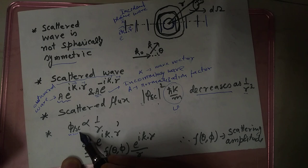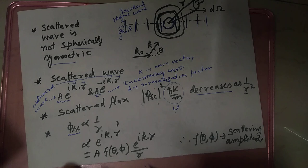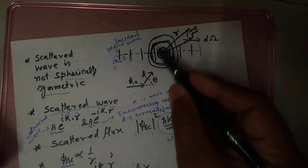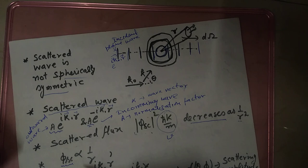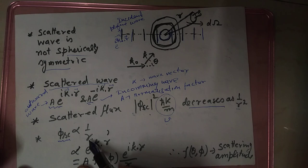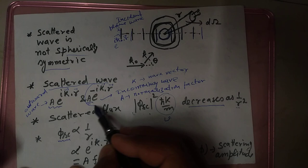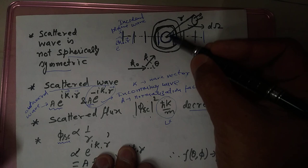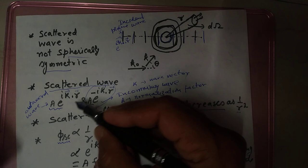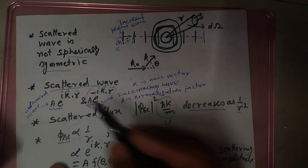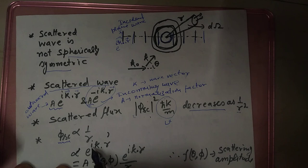So this means that we can say that this wave function for the scattered component is directly proportional to 1/R. And we will not consider the e^(-iK·r) component because it is representing particles coming inward — in the inward direction. So we can use e^(iK·r). This scattered wave function is directly proportional to e^(iK·r).